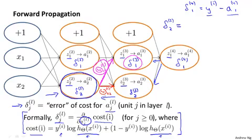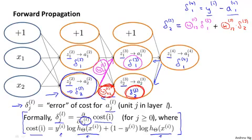So concretely, let me fill this in. This delta 2, 2 is going to be equal to theta 2, 1, 2, which is that magenta weight, times delta 3, 1 plus, and then the thing I had in red. That's theta 2, 2, 2 times delta 3, 2. So it's really literally this red weight times this value plus this magenta weight times this value. And that's how we wind up with that value of delta.